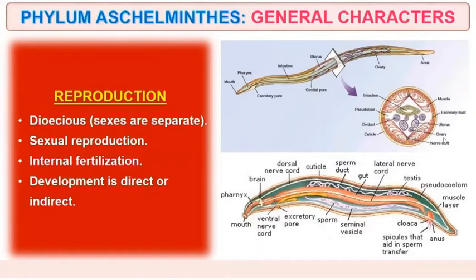Organisms are dioecious, meaning the sexes are separate. These organisms usually perform sexual reproduction. The type of fertilization is internal. Development is both indirect as well as direct — so both types of development are observed.